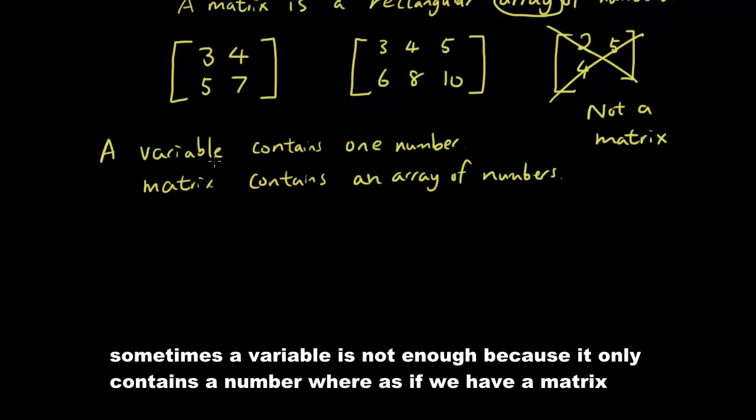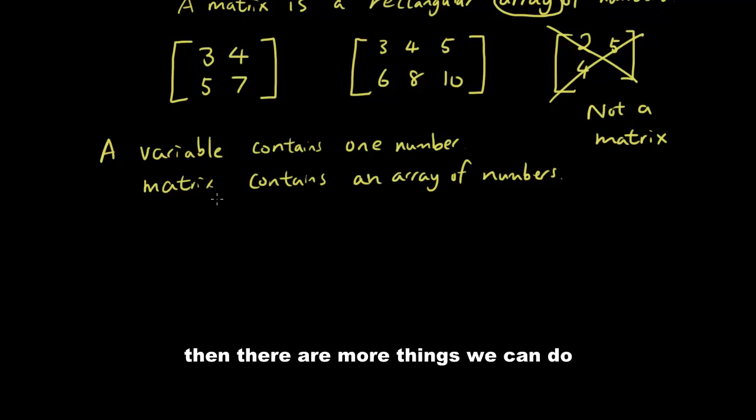So when we're dealing with some more complicated situations in math, sometimes a variable is not enough. Whereas, if we have a matrix, then there are more things we can do to perform some more calculations on multiple numbers.